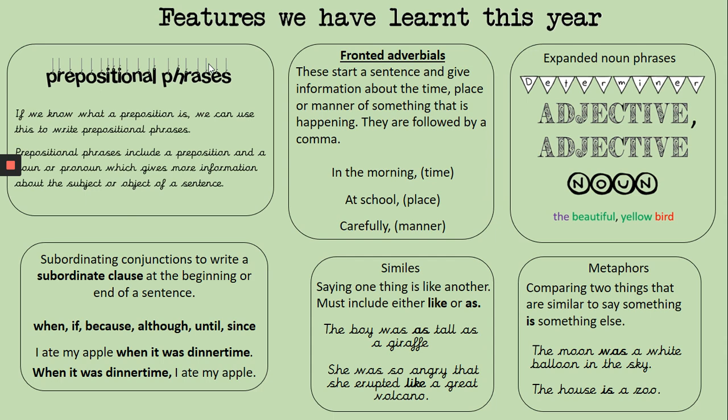Metaphors are a little bit trickier. We're comparing two things, but we're not saying something is like something else - we're saying it is something else. 'The moon was a white balloon in the sky' - not that it was like a white balloon, but that it actually was a white balloon. 'The house is a zoo' - it's not actually a zoo, but it makes you think the house was crazy and loud, with people running about. It gives you a better idea of what something is like.